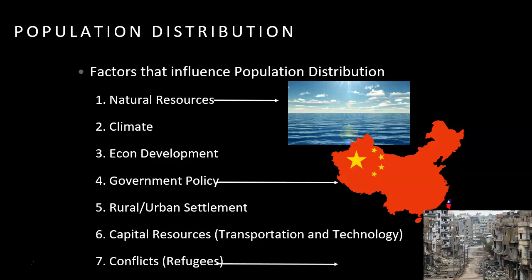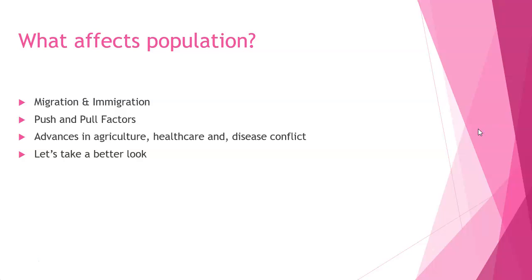Capital resources, transportation, and technology go along with that economic development and urban settlement — the more transportation and technology you have, the higher your population tends to be. Finally, conflicts can affect your population both positively or negatively. If you have a conflict, you might have a lot of people leaving your country. On the flip side, if your country tends to not have a lot of conflict, you tend to have more people trying to settle there.